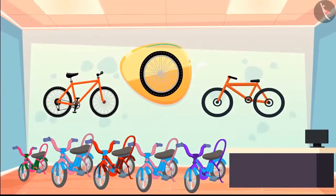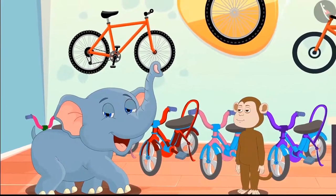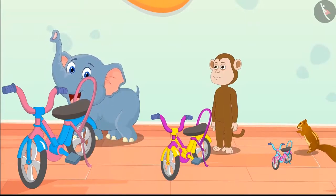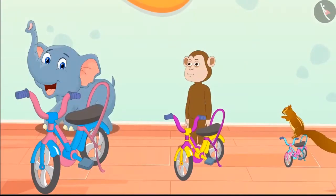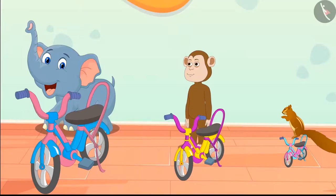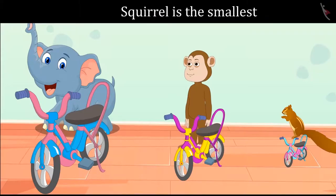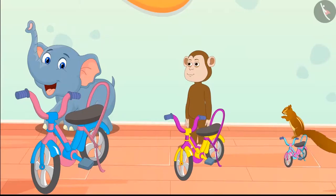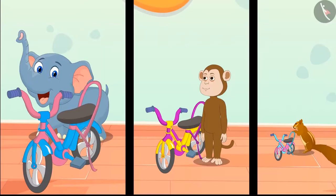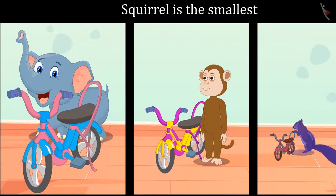A new bicycle shop has opened in the forest and all the animals are very excited. The elephant, monkey, and squirrel all three reached the shop to buy bicycles. Can you tell which bicycle belongs to which animal? The biggest bicycle is for the elephant because it is the largest among the three. The squirrel is the tiniest, so it gets the smallest bicycle. And this is the monkey's bicycle. So the elephant took the biggest bicycle and the squirrel took the smallest.